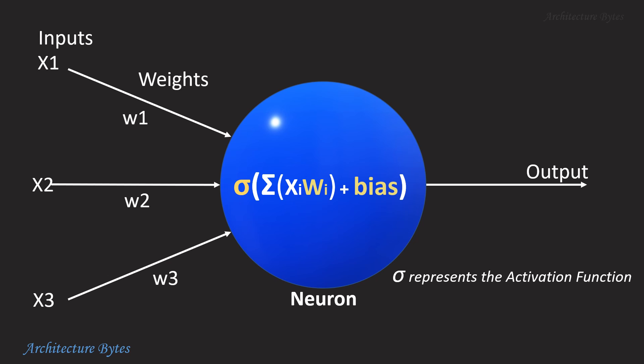So neuron, the basic building block of a neural network, is essentially a mathematical function.